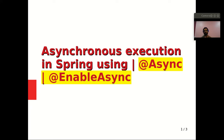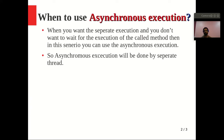First, let's discuss when we should go with asynchronous execution. When you want separate execution and you don't want to wait for the execution of the called method, then you can use asynchronous execution. Asynchronous execution will be done by a separate thread. Normally our program runs from top to bottom, but sometimes one operation or method may take a lot of time and could make other methods wait. In these cases it makes sense to run a few methods in parallel — this is called asynchronous execution.